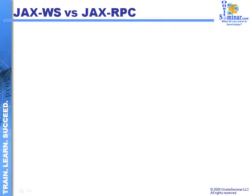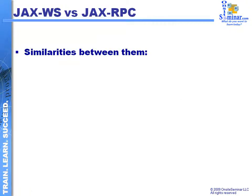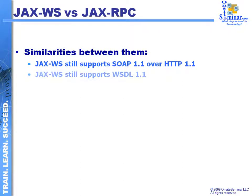JAX-WS is really an enhancement and an evolutionary change from the JAX-RPC environment. Looking at the similarities, both JAX-WS and JAX-RPC support the SOAP 1.1 configuration and messaging aspects over HTTP. In addition, JAX-WS also supports the same version of WSDL that JAX-RPC supports, including the ability to construct messages, define different sets of services, and transmit those across both models.